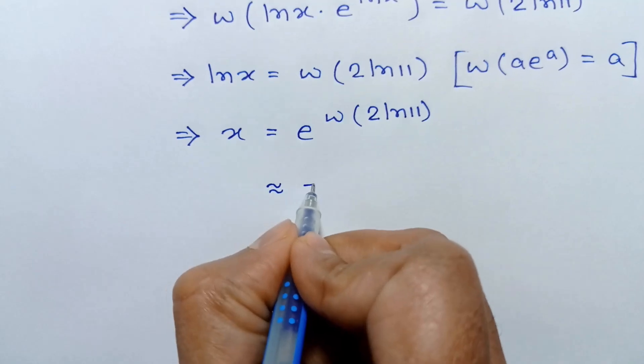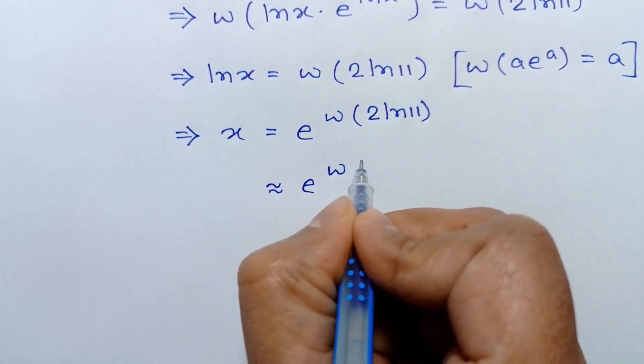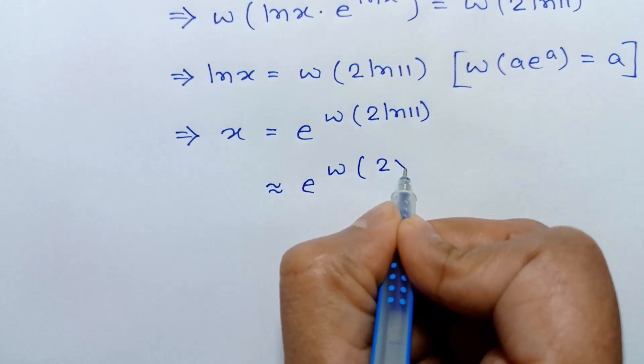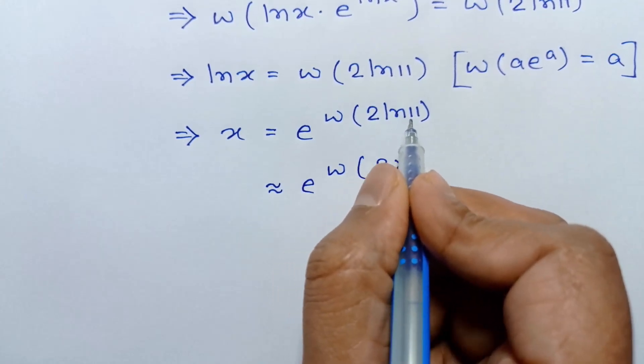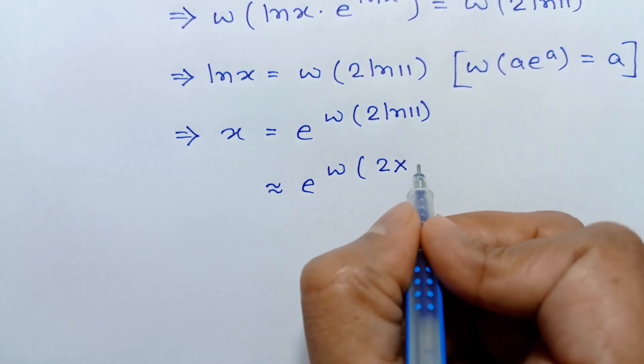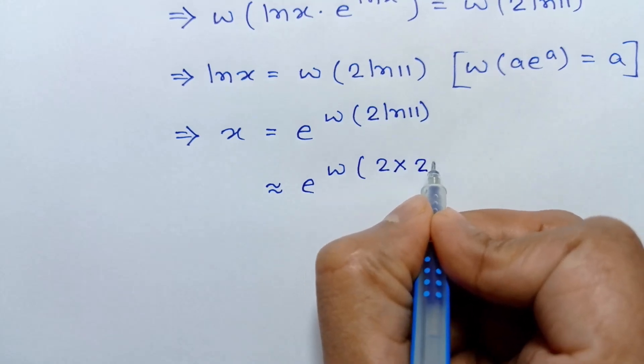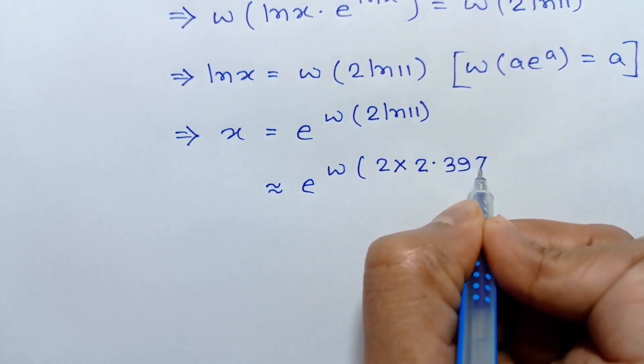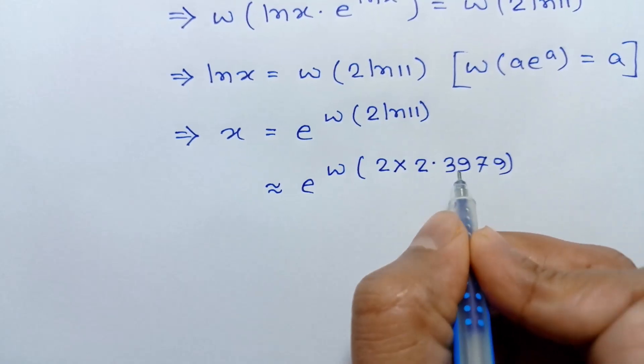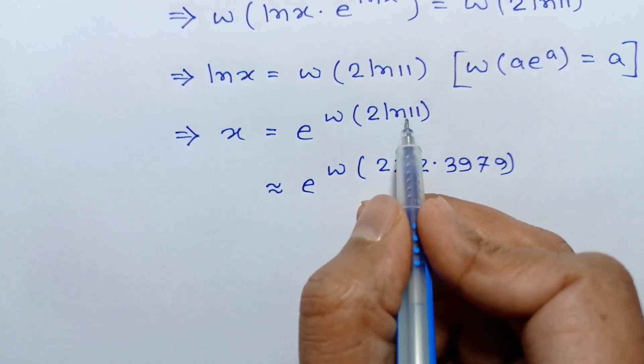e to the power W of 2 times the value of ln 11 is 2.3979. This is the approximate value of ln 11.